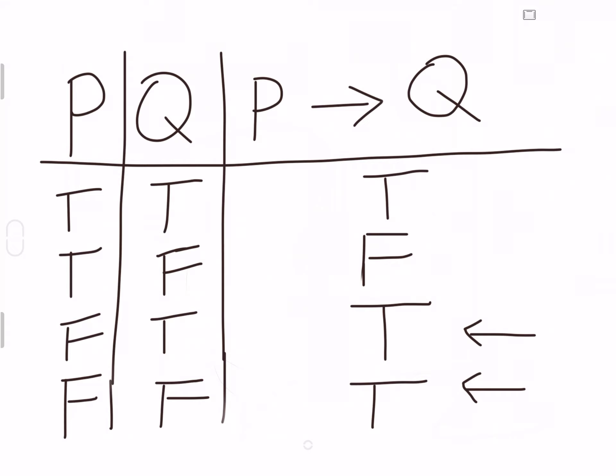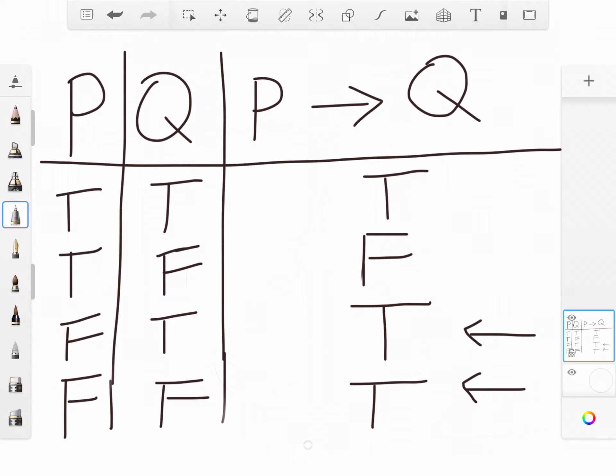To get started, I want to first give a completely unrelated example, and I'll use that example at the very end to give you my best explanation for why these rows have to be true. I'll give you four different explanations in this video, but the best one is the fourth, and to motivate that fourth explanation I'm going to give you an example that has nothing to do with conditional statements.